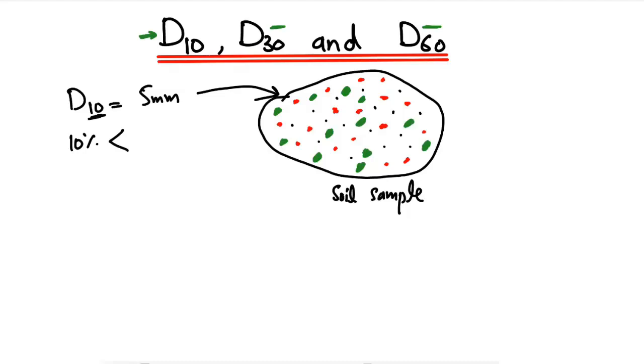This means that 10% of the particle sizes are lower than 5 millimeters for this soil sample, while 90% of this whole soil sample are greater than 5 millimeters.